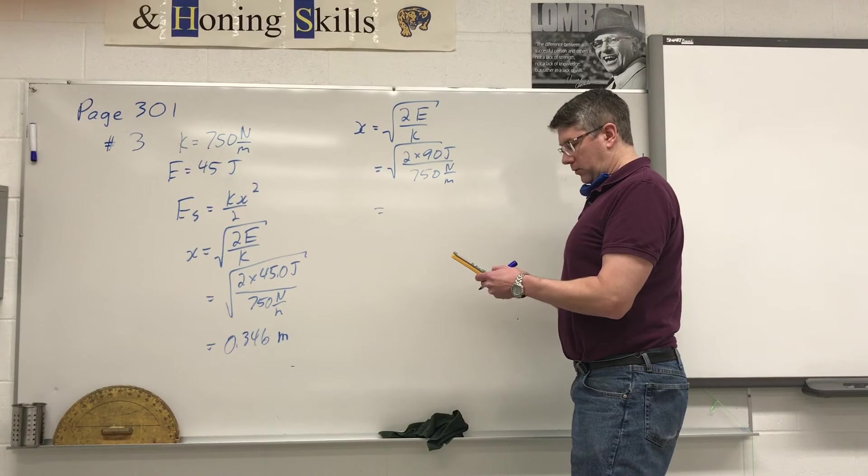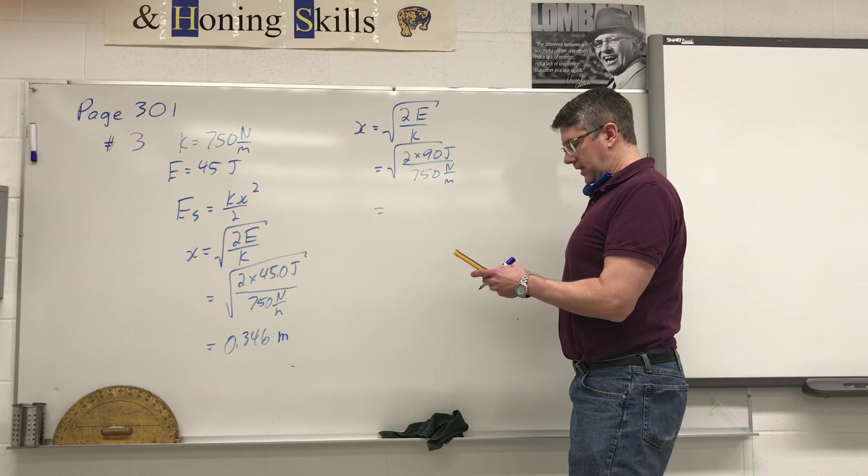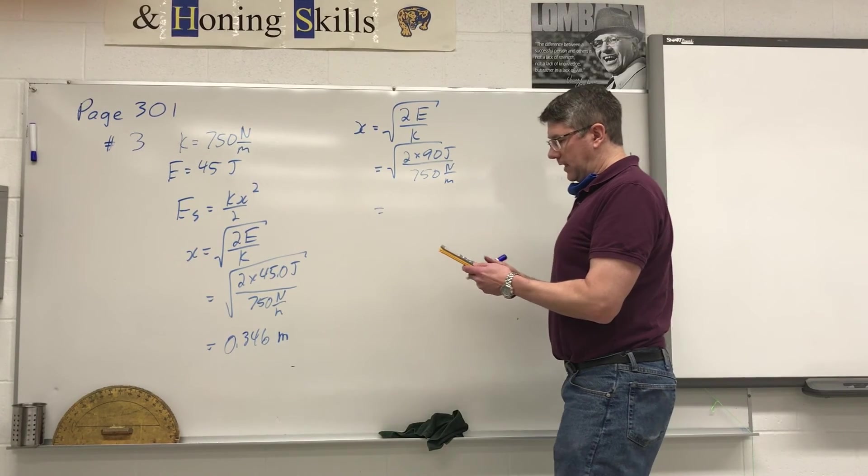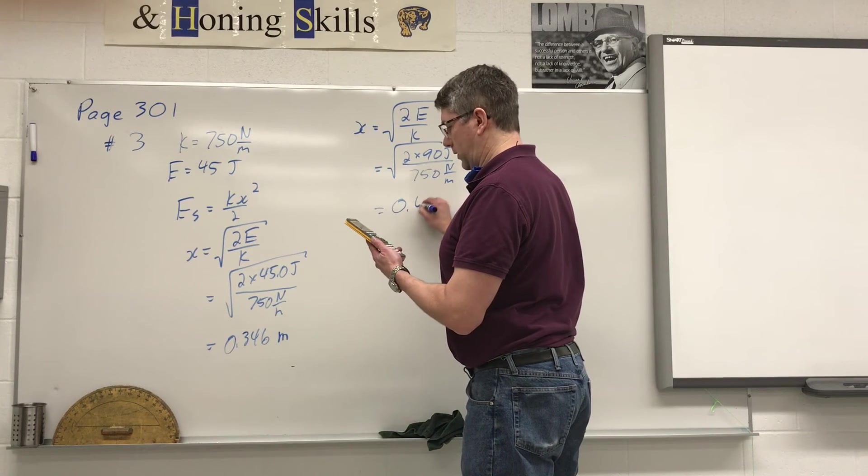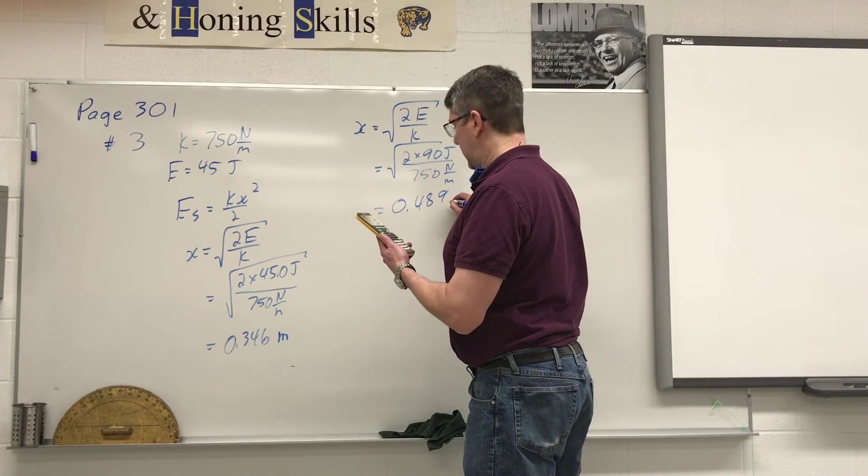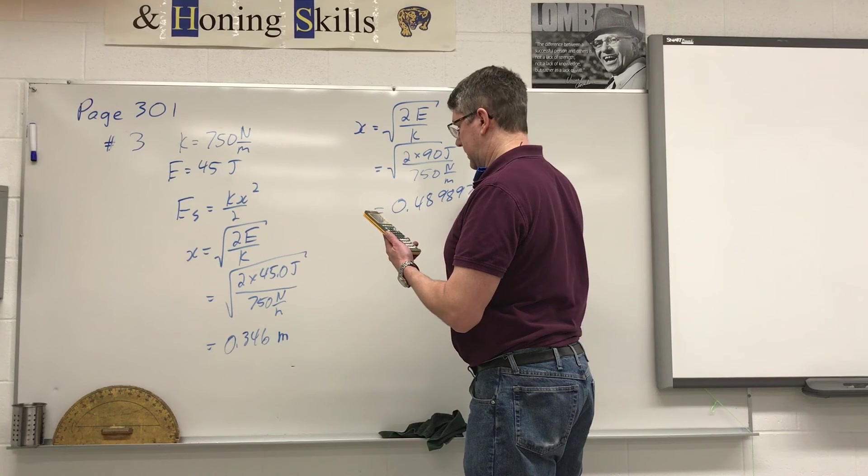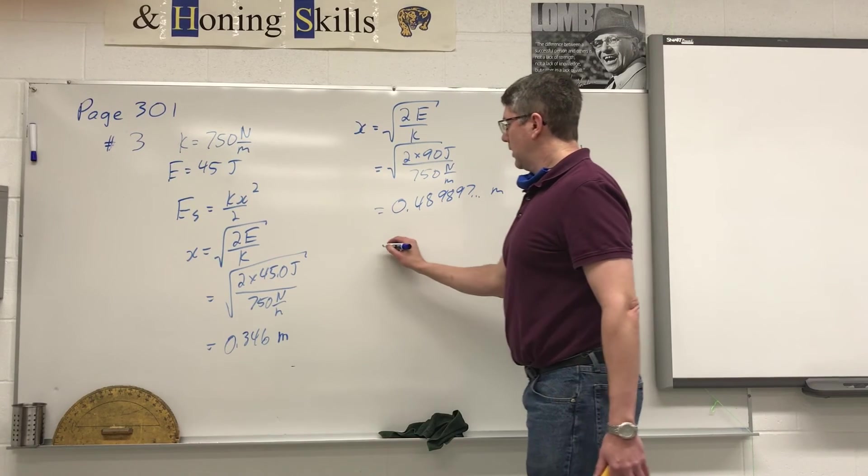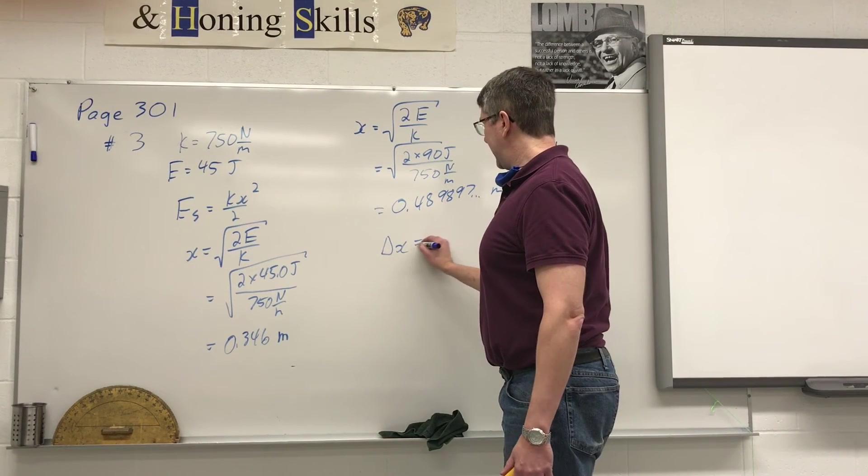Square root of 2 times 90 divided by 750 gives us 0.489897 et cetera meters. So to figure out the change in length,